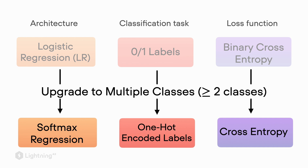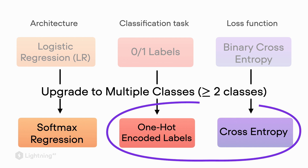Now we need to talk about the loss function. Coupled to the loss function is also the encoding of the class labels, as we will see. In this video we are going to talk about the cross entropy loss and the one hot encoded class labels that we need as the input for the cross entropy loss.